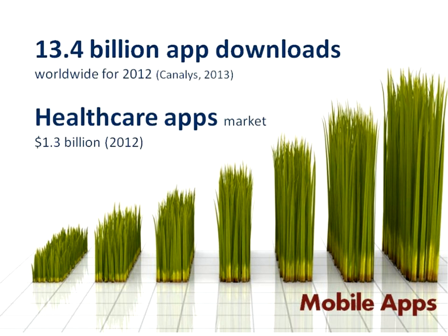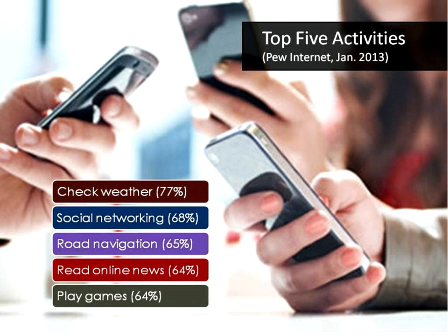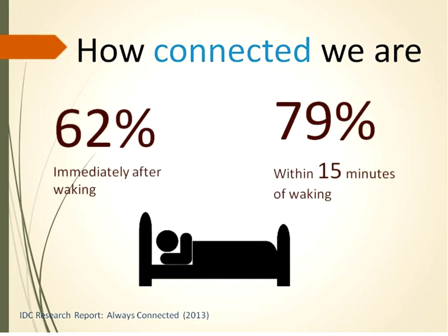In terms of app downloads, approximately 13.4 billion worldwide for 2012, and among all apps downloaded, healthcare apps make up a huge market — approximately 1.3 billion dollars in 2012. What are the top five activities on a cell phone? First, people check weather. They do social networking, road navigation, get information about maps, and they also read online and play games. These statistics give you a sense of how connected we are with our mobile devices.